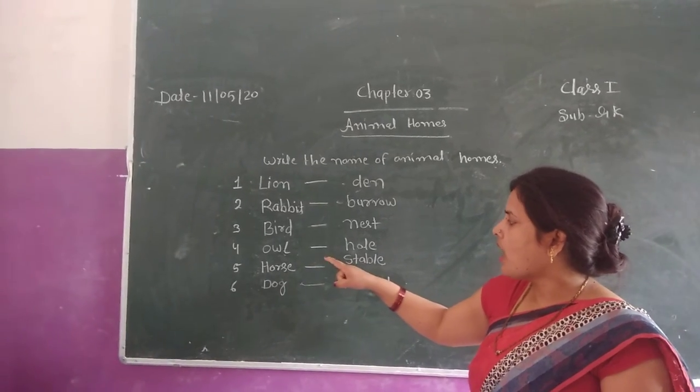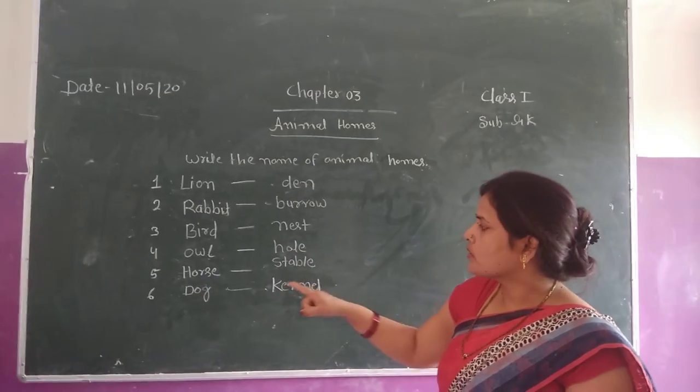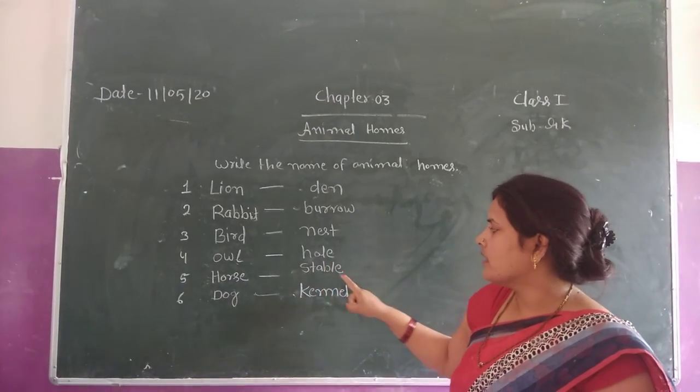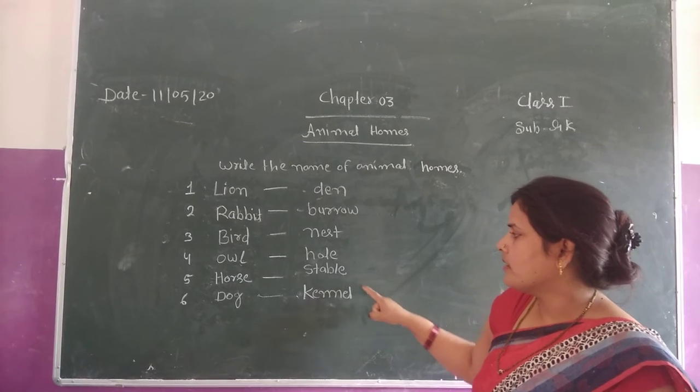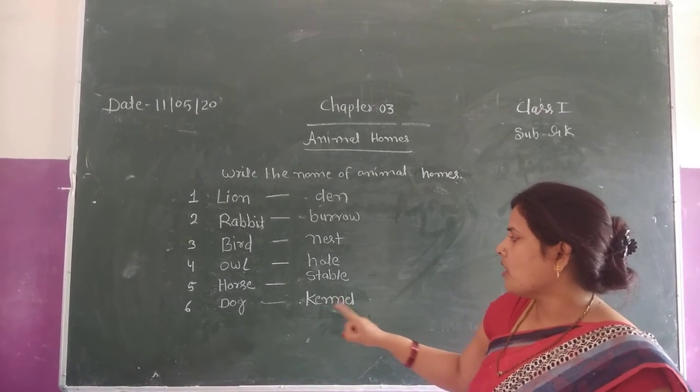Question number 4: owl — hole. Question number 5: horse — stable. Question number 6: dog —